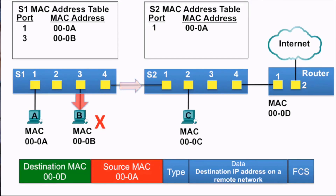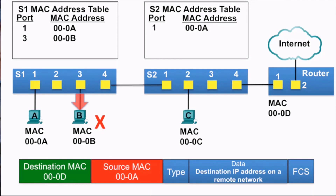Switch S2 receives the Ethernet frame and examines the source MAC address, which is in its MAC address table, so it also simply refreshes the 5-minute timer. It then examines the destination MAC address of the frame, which is not in its MAC address table, so it floods it out all ports.